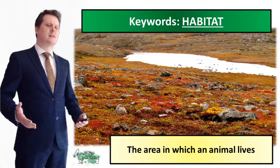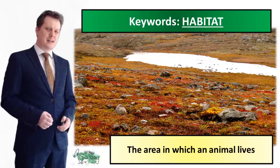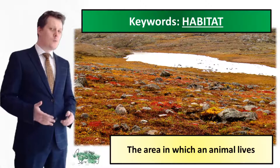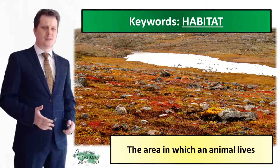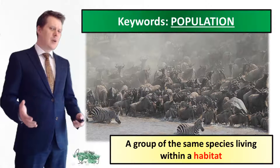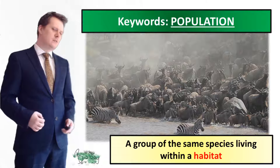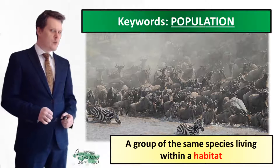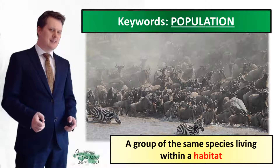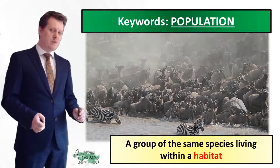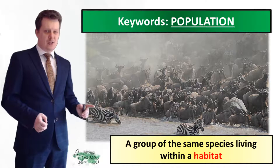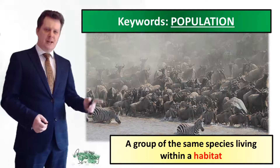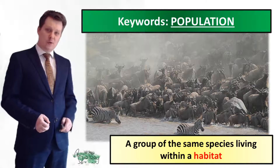Our first keyword is habitat, and habitat is the area in which an animal lives. Next we have a population, which is a group of the same species within a habitat. In this picture we've got a population of zebra and we've got a population of wildebeest.